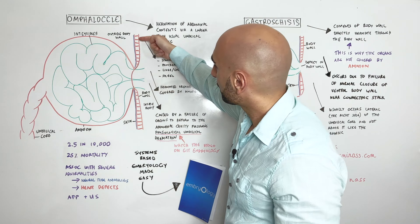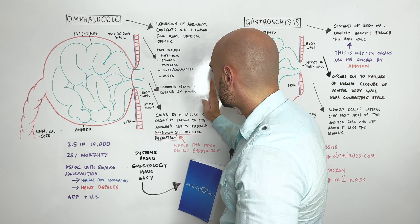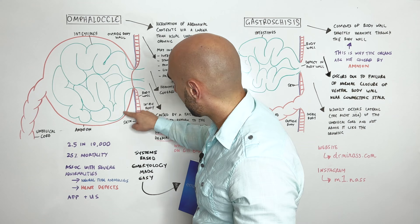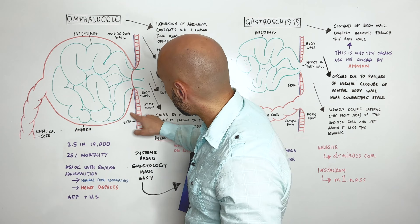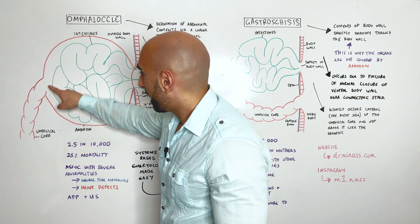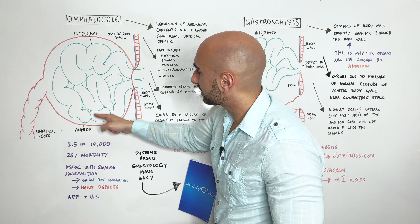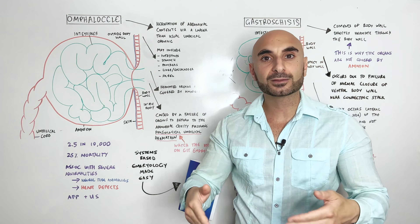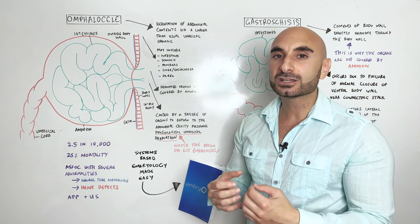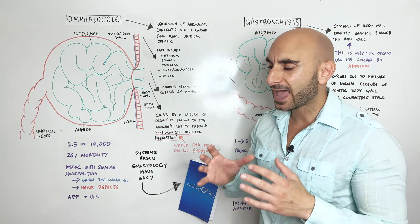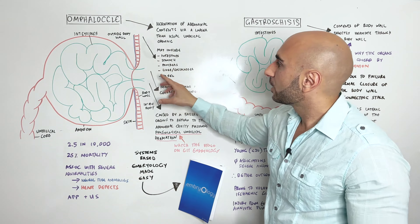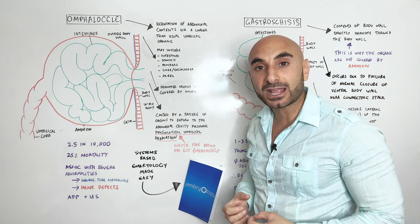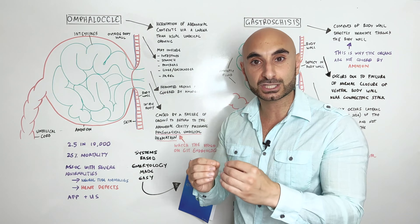Let's start with omphalocele. So here we have the abdominal wall — the inside of the body is this way, the outside of the body is this way. Over here in green we have intestines. Surrounding the intestines is the amnion, and so there is amniotic fluid outside here, and this is the umbilical cord. Notice how the intestines are outside of the body cavity. There is a normal type of herniation in normal development of the gastrointestinal system called physiologic umbilical herniation, where the gut tube can actually herniate outside of the body, rotate, and then return back inside the body.